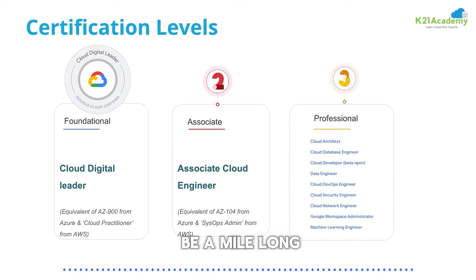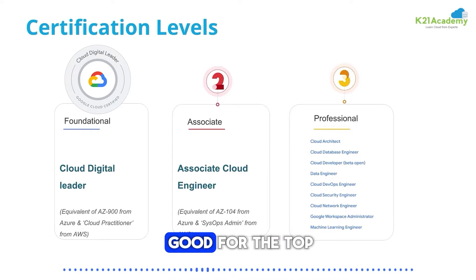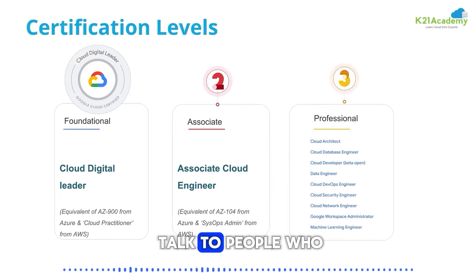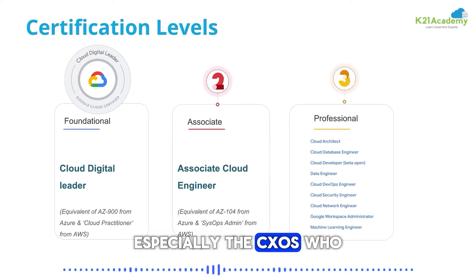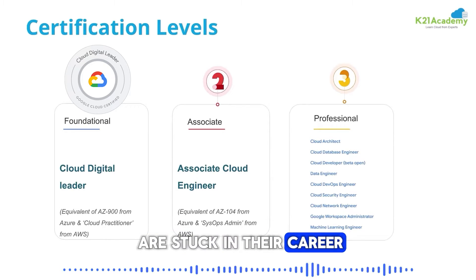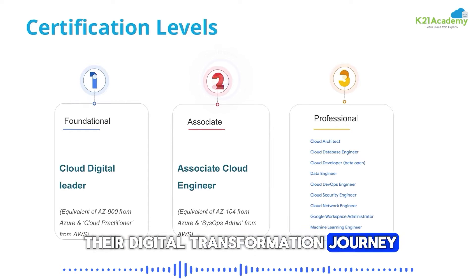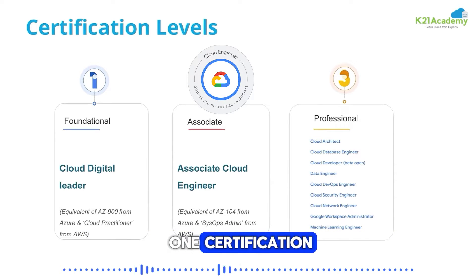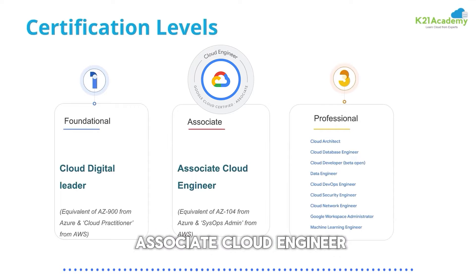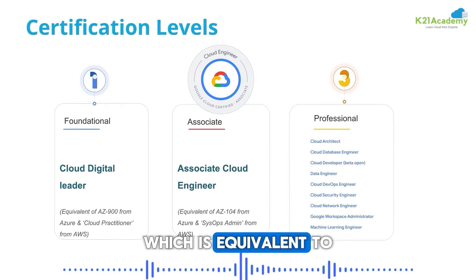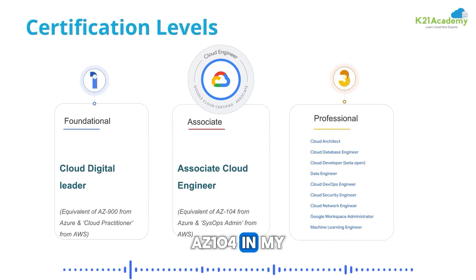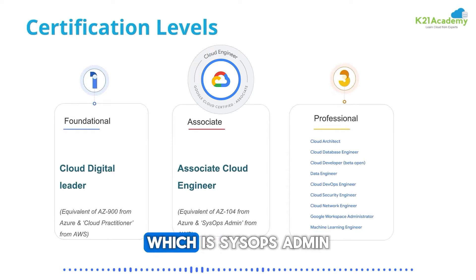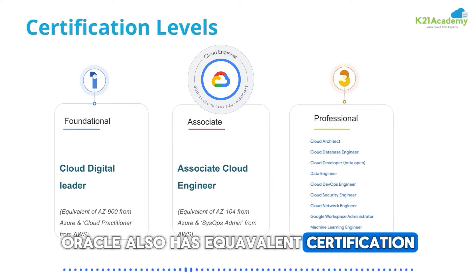Imagine covering 50 services in eight hours — it's going to be a mile-long but an inch-deep course. But this is very good for top-level leaders who have been in the industry for almost 20 years, especially CXOs who are stuck in their career and digital transformation journey. Associate level is only one certification called ACE — Associate Cloud Engineer — which is equivalent to AZ-104 in Microsoft Azure. AWS has SysOps Admin, and Oracle also has an equivalent certification.